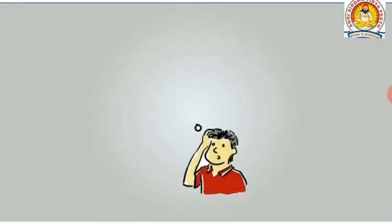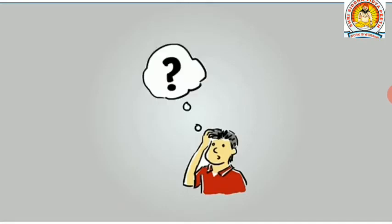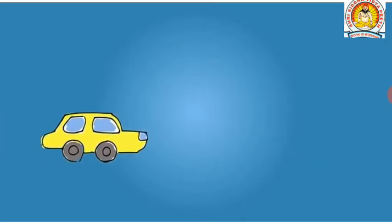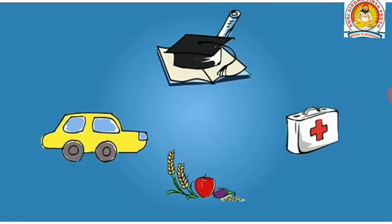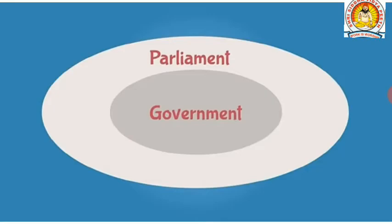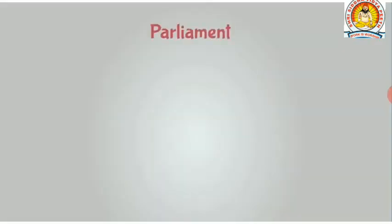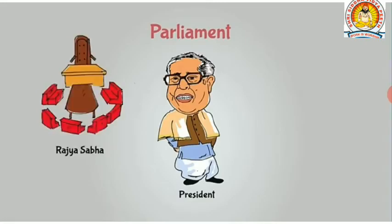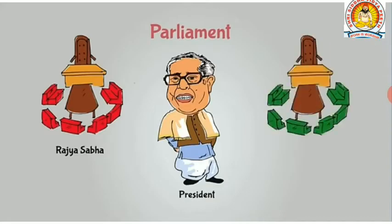But how is the parliament related to our life? The government and its ministries make decisions on our behalf about various things which are a part of our life, like transport, education, healthcare, food, and even sports. But the parliament is bigger and the government is a part of it. The parliament consists of the President of India and two houses: the upper house, which is the Rajya Sabha or the Council of States, and the lower house, which is the Lok Sabha or the House of the People.